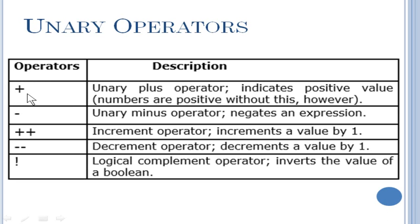The first operator is the unary plus operator. This will indicate a number as a positive number. If you don't use this plus operator, never mind — it will be the same. By default, you do not need to use a plus sign in front of any number or expression since it is positive. Next is the unary minus operator, which will negate an expression or a number. If you put a minus sign in front of a number, it will become a negative number. You can call it a negation symbol.